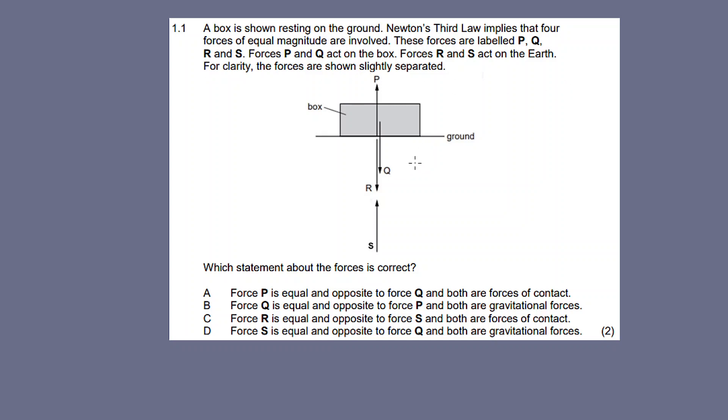Forces R and S act on Earth. For clarity, these forces are shown slightly separated. P and Q are acting on the box, while Q and R are acting on the Earth, not the other way around. Let's take this question as is.